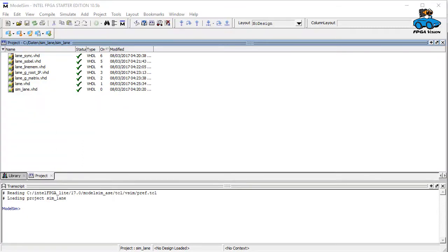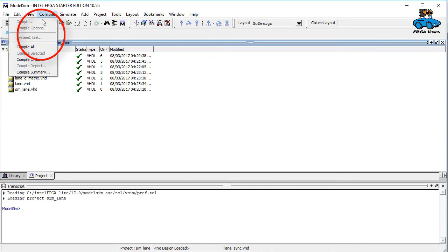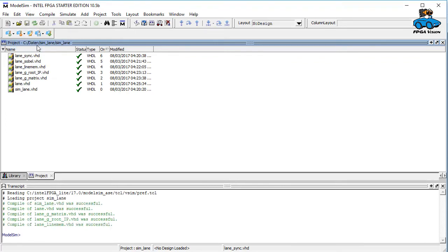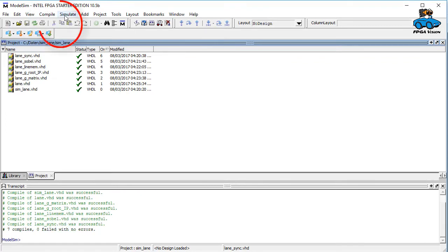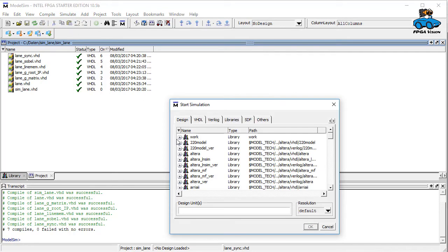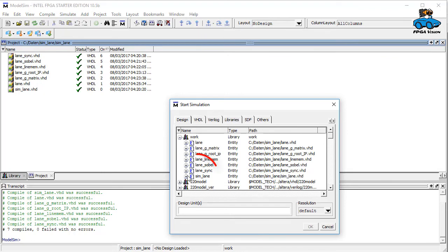Here we have the ModelSim simulator. We have the source files and compile them. Then we start the simulation. It's in the work directory.